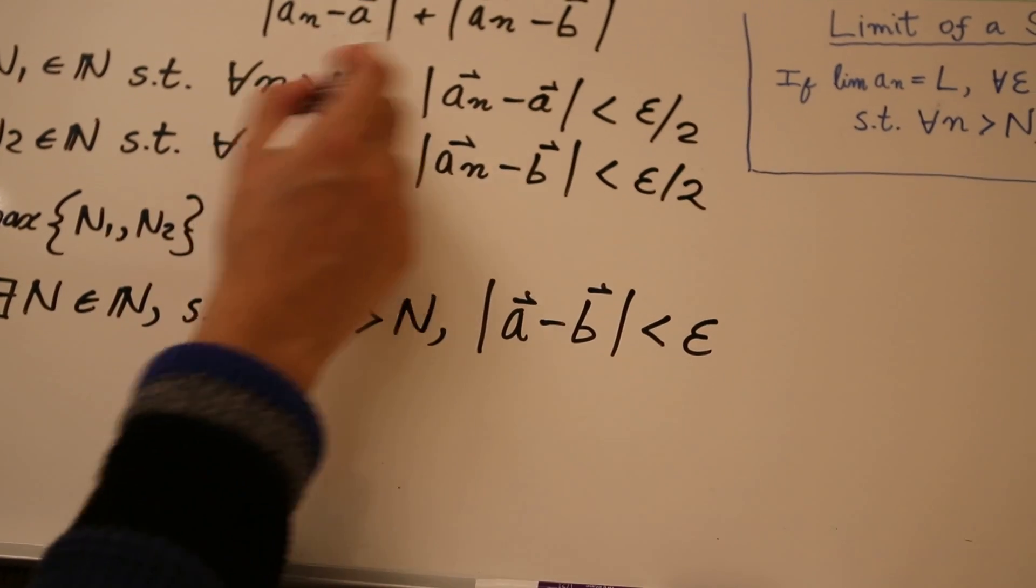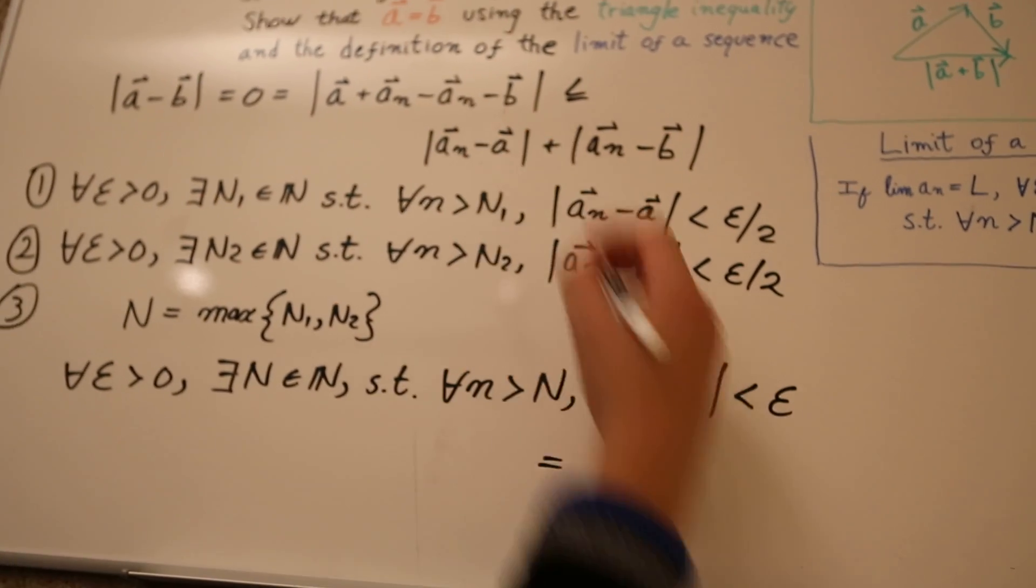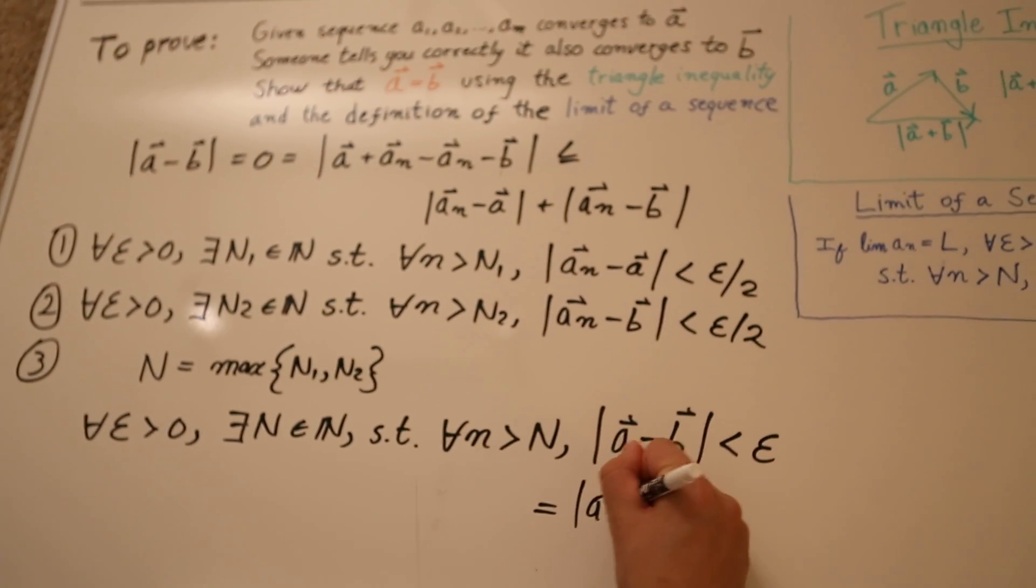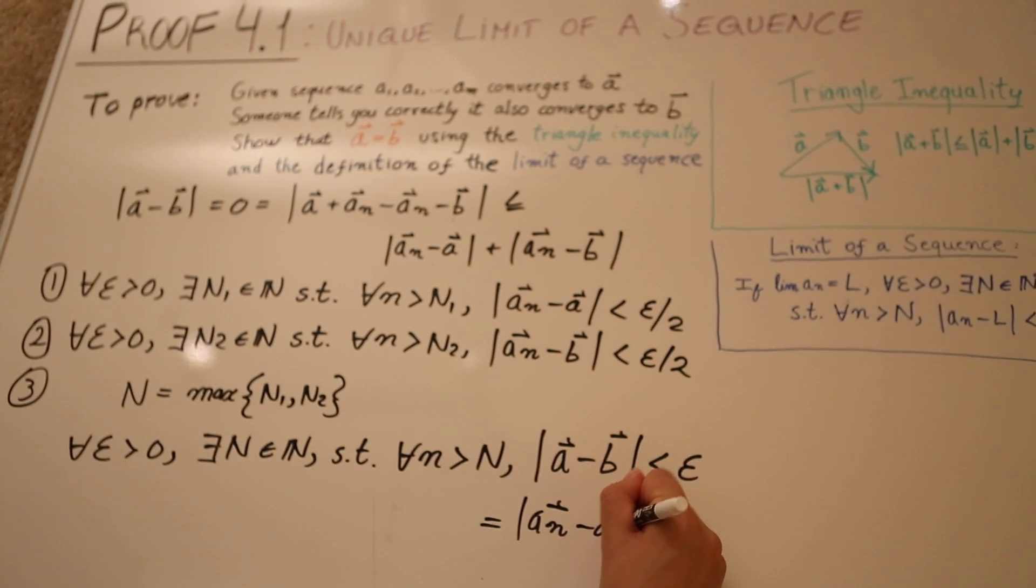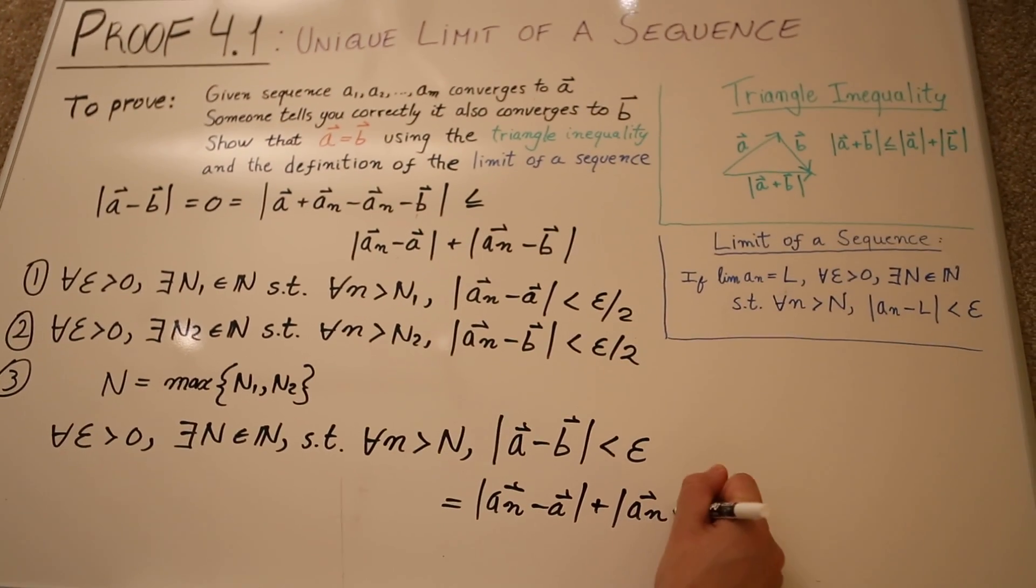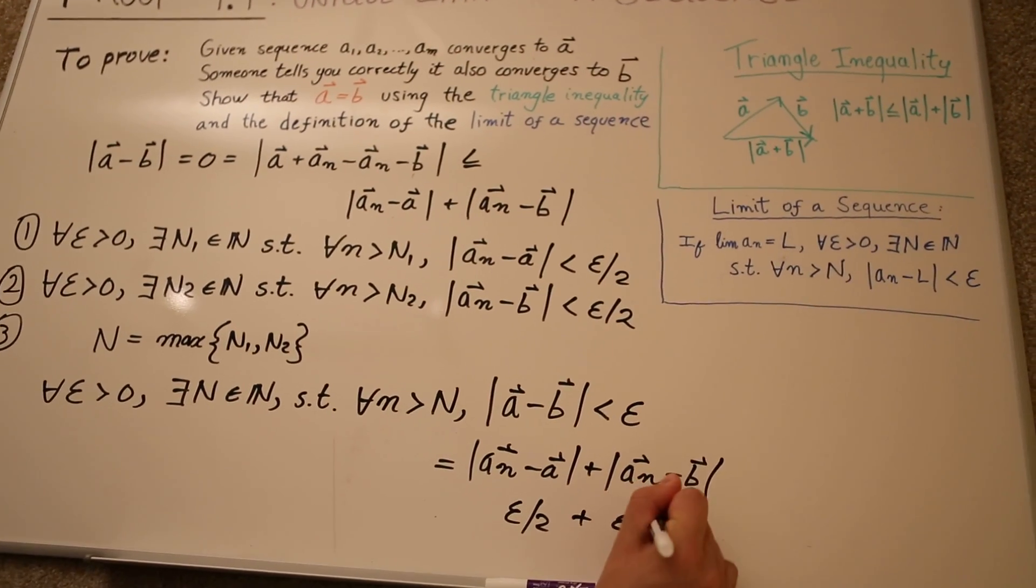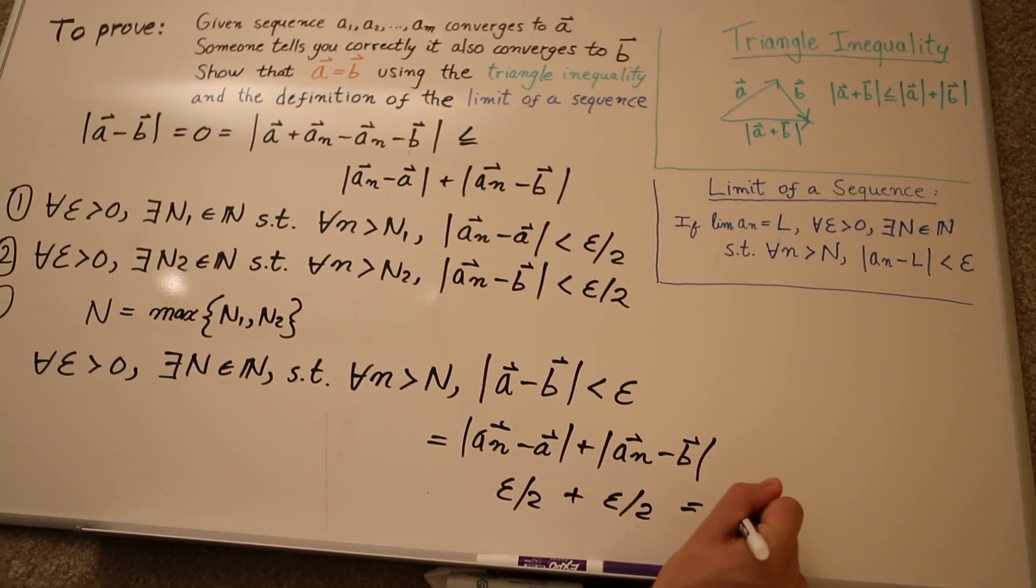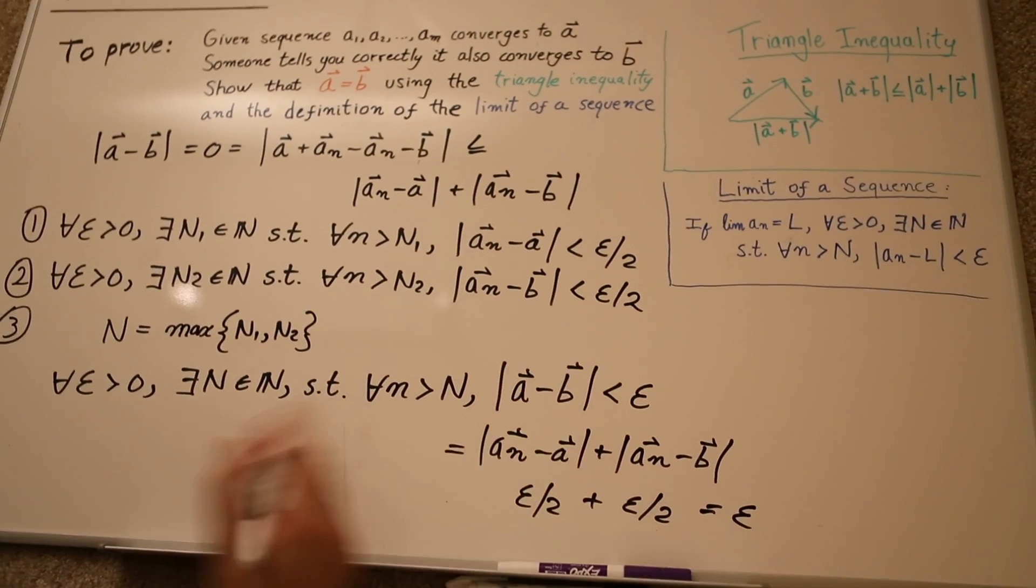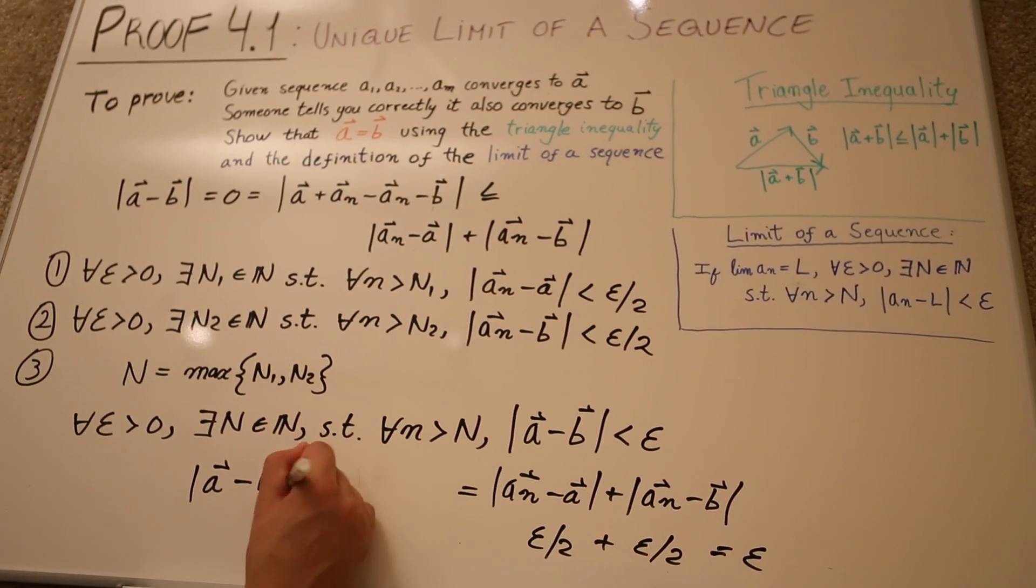And that's true, because we know that A minus B is equal to that, we just use the triangle inequality, AN minus A plus AN minus B, and that's just epsilon over two plus epsilon over two, which is equal to epsilon. So, we just proved here that A minus B is less than epsilon.